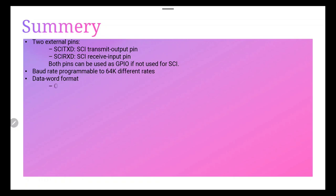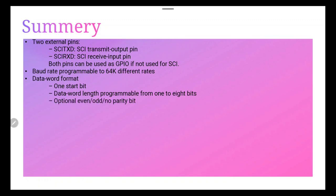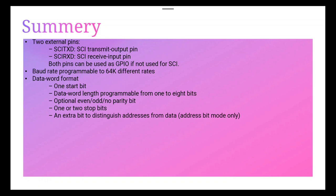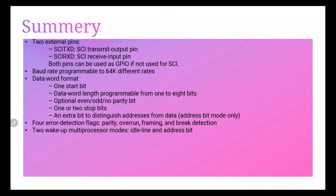The data word format consists of: one start bit, 1 to 8 data bits, optional even or odd parity bits, one or two stop bits, and an extra address bit that distinguishes address from data — used in address bit mode only. There are four error detection flags: parity, overrun, framing, and break detection. Two wakeup multiprocessor modes are available: idle line mode and address bit mode. Idle line mode is generally used; address bit mode is not widely used.